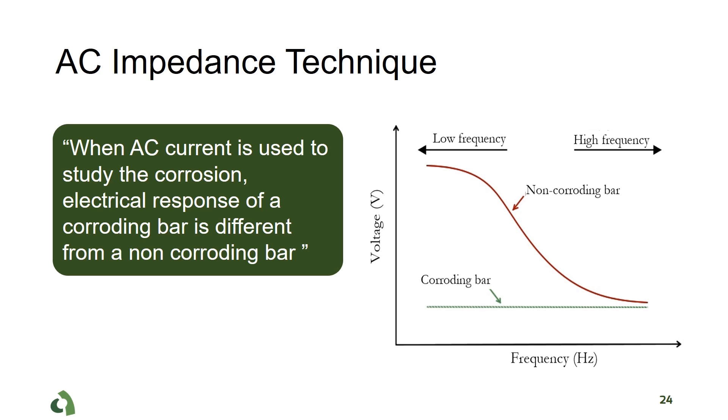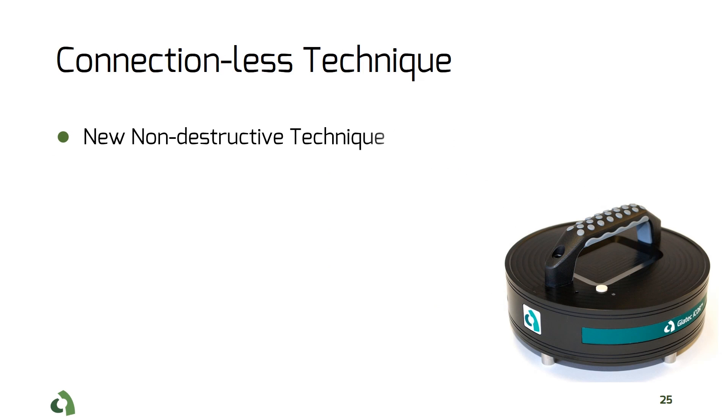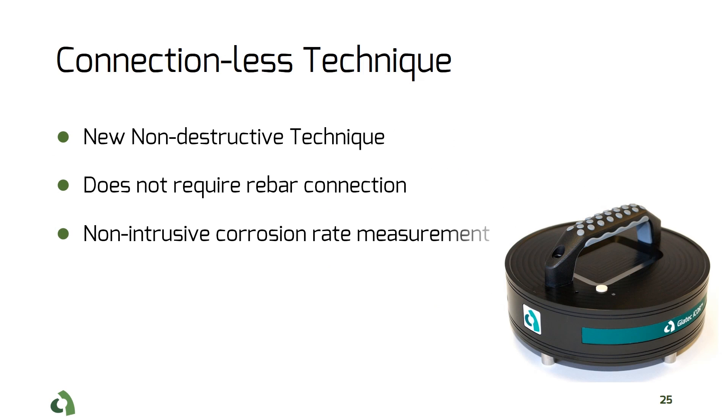The connectionless technique is the most recent development to measure the corrosion rate of a corroding rebar in the field. This technique is unique, since it does not require any rebar connection, which makes it faster and more efficient.